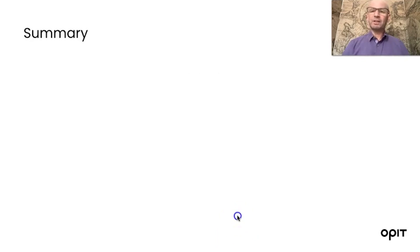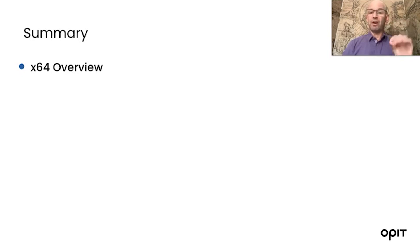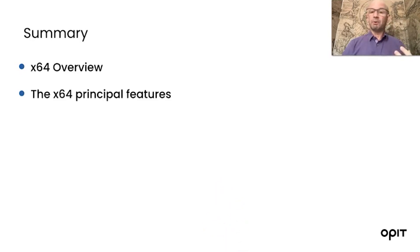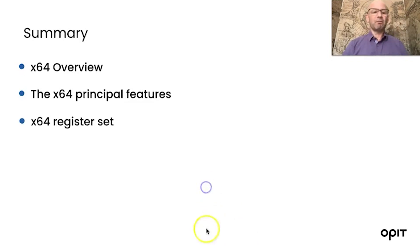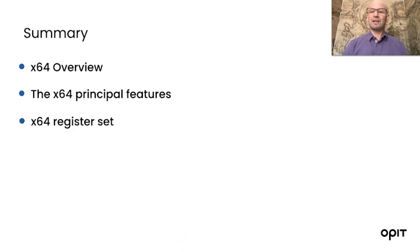That covers everything for this session. We took a look at the x64 and realized there's an extra layer on top of the x86. The main features are eight new registers, a 64-bit space for all registers, and the R prefix used for the eight new registers. Thanks for tuning in, and we'll see you in the next session.